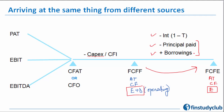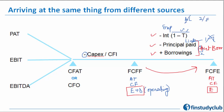There is a very simple relationship: FCFF belongs to both equity plus debt, while FCFE belongs only to equity. Whatever delta needs to be paid to debt holders must come between — you pay them interest, you pay them principal, and if they bring in more capital you add borrowings, which in the formula is called 'plus net borrowings.' Please do not be confused with signs — just understand whether cash is coming in or going out.